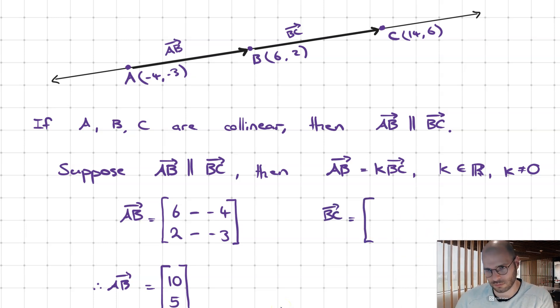For BC, it will be 8 and 4. Now we go back to our argument here.